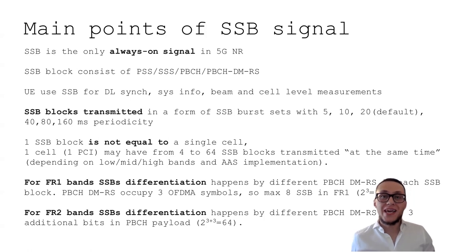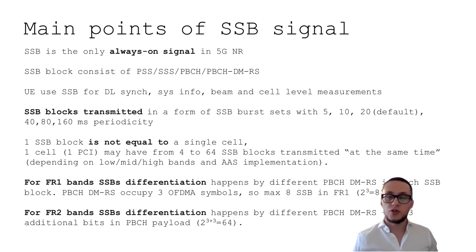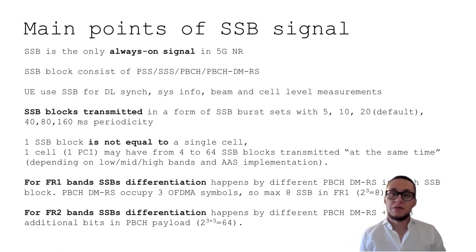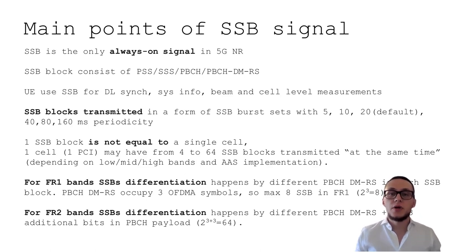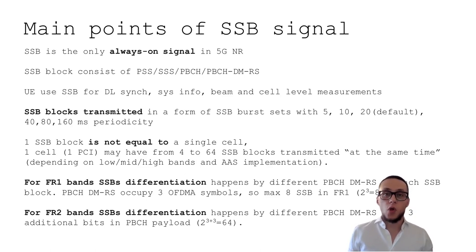Let's start with the main signal of 5G — the SSB block. This is the only always-on transmitted 5G NR signal. It is an essential signal. It consists of the primary synchronization signal, secondary synchronization signal, PBCH — a very important channel for downlink synchronization which contains the master information block — and a demodulation reference signal. This helps the UE receive and demodulate the SSB block, because in 5G there are no cell reference signals like in 4G.